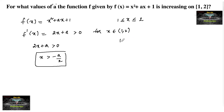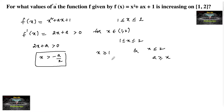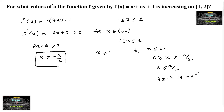We have 1 ≤ x ≤ 2, which implies x ≥ 1 and x ≤ 2. When x ≤ 2, that implies 2 ≥ x, and x > -a/2. So we consider 2 ≥ -a/2, or 4 ≥ -a, or equivalently -4 ≤ a, changing the inequality direction.